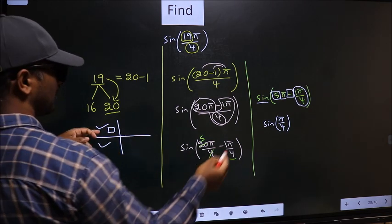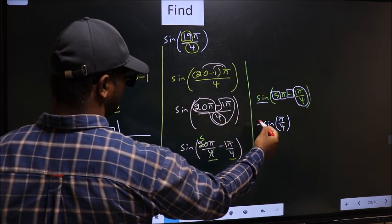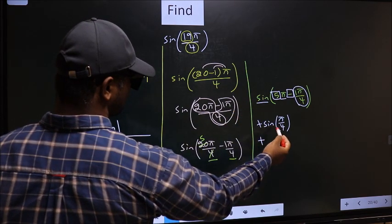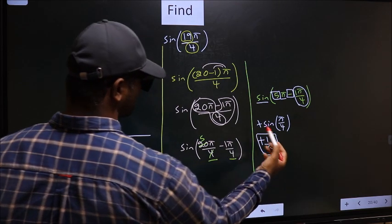And in the second quadrant, sin is positive. So put plus. So plus sin π by 4 is 1 by root 2. So this is our answer.